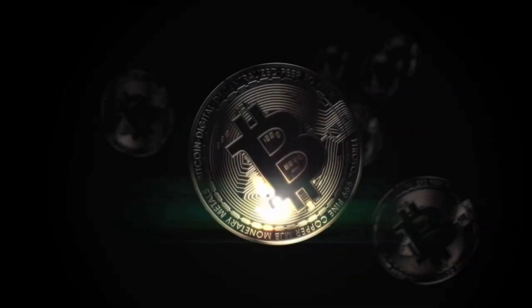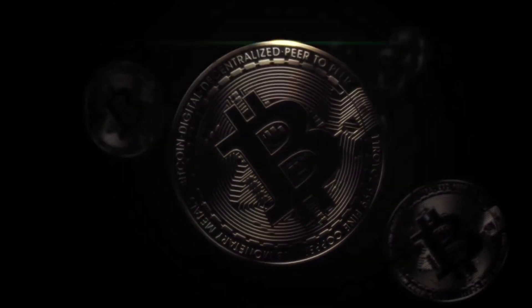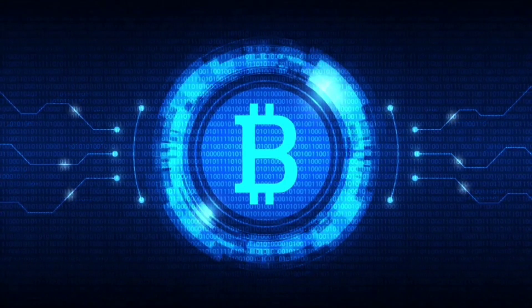What is cryptocurrency? A cryptocurrency is a digital or virtual currency that is secured by cryptography, which makes it nearly impossible to counterfeit or double-spend.